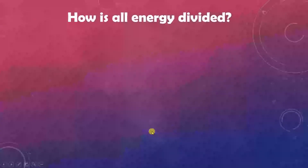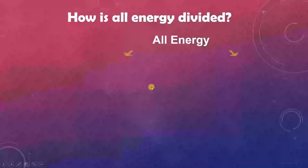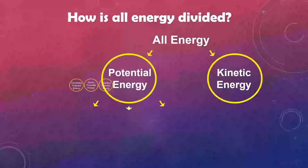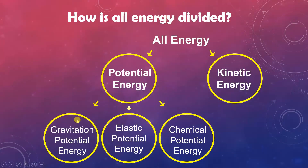How is all energy divided? Basically, energy is divided into potential energy and kinetic energy. Potential energy is further divided into gravitational potential energy, elastic potential energy, and chemical potential energy. We will discuss each one, with detailed focus on gravitational potential energy.